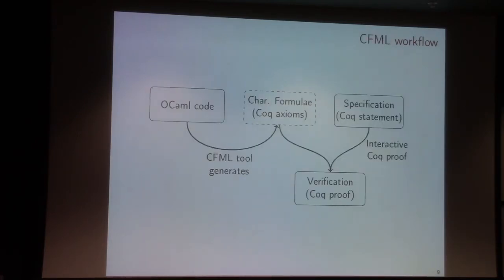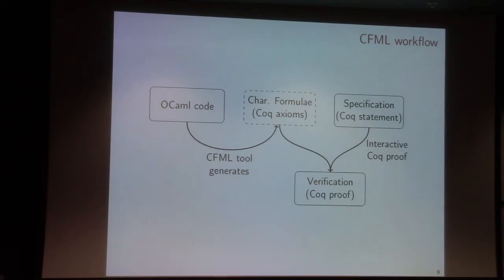From the CFML point of view, we start with an actual OCaml implementation, and the tool will generate what we call a characteristic formula as a set of Coq lemmas. This characteristic formula is a higher-order formula that represents the semantics of the program. Then the user who is verifying using CFML must write the specification for the program — the specification they want to prove about this program — as a Coq theorem.